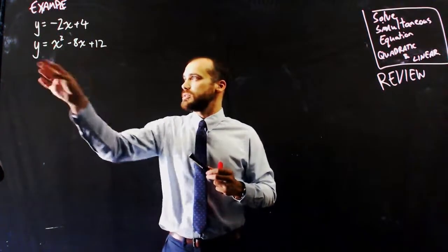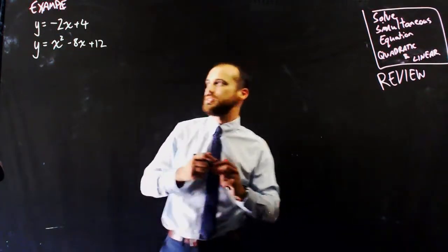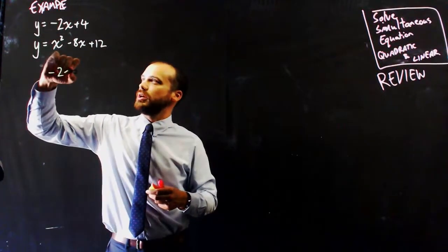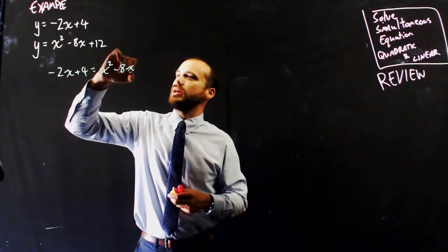If y equals this and y equals this, then this must equal this. It's simultaneous equations using substitution. So, -2x + 4 = x² - 8x + 12.